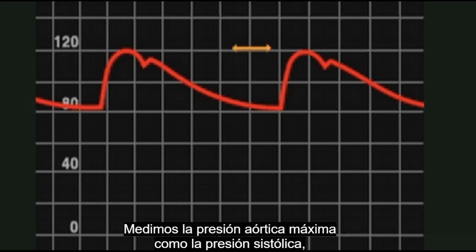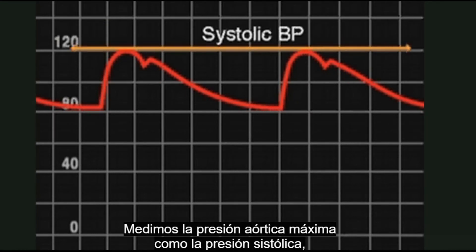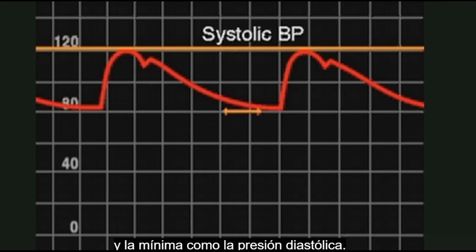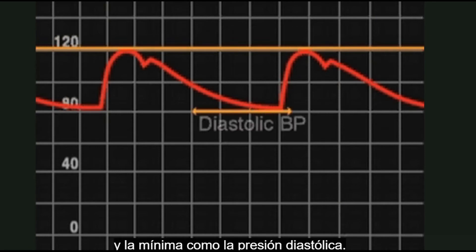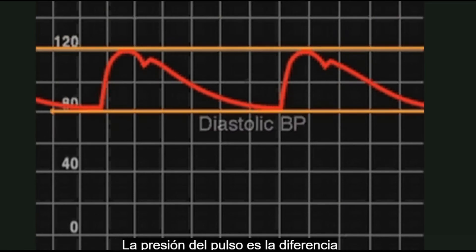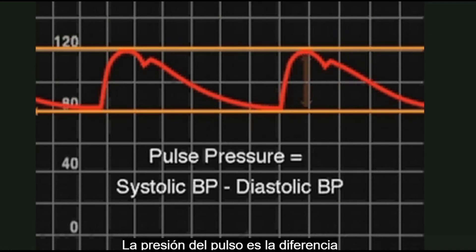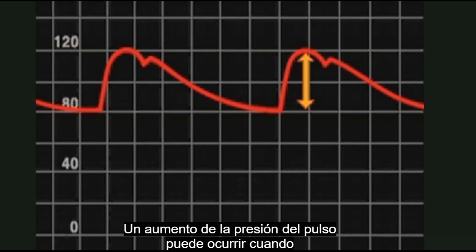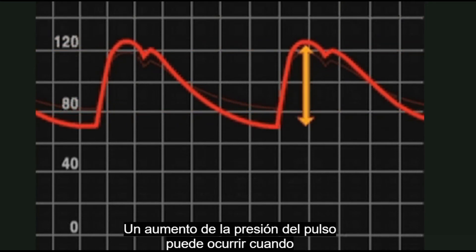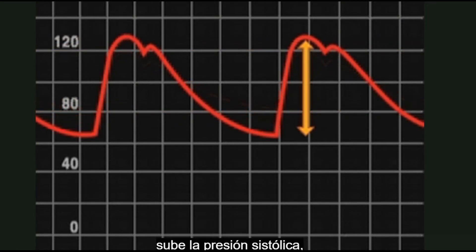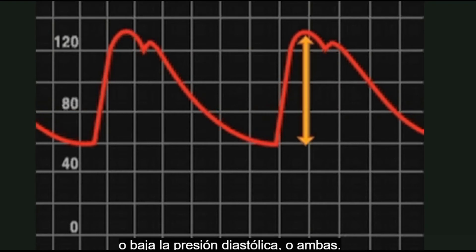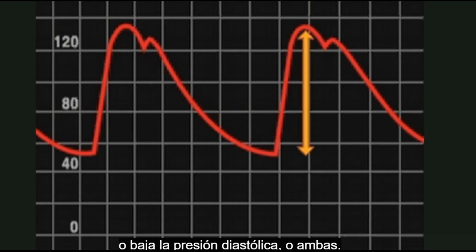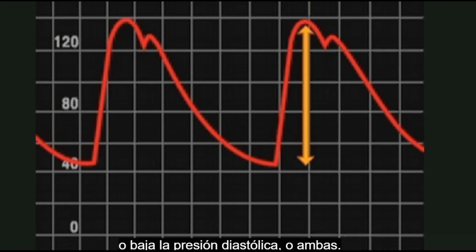We measure the maximum aortic pressure as the systolic pressure and the minimum as the diastolic pressure. The pulse pressure is the difference between the systolic and diastolic pressures. An increase in pulse pressure can result when the systolic pressure rises, the diastolic pressure falls, or both.